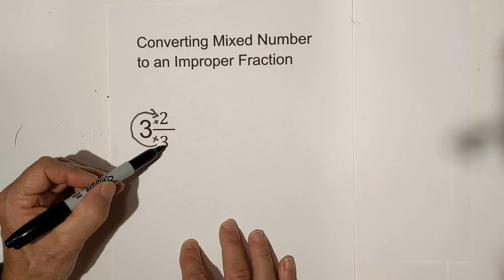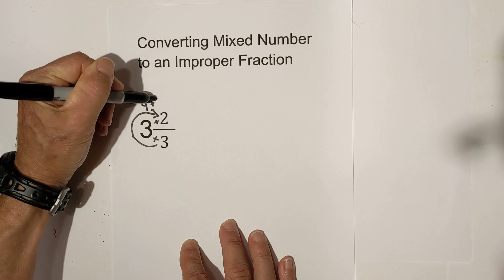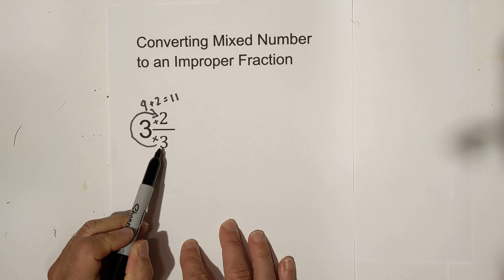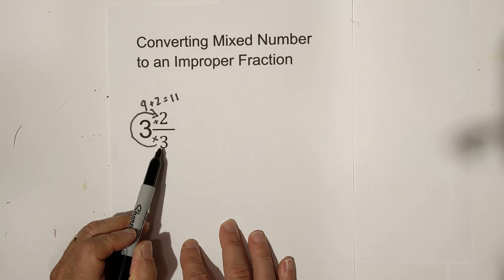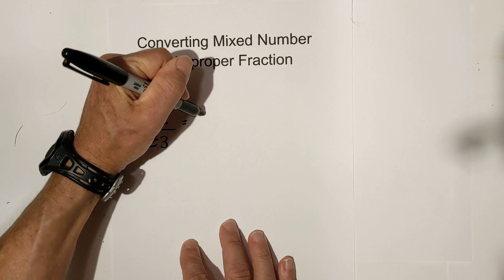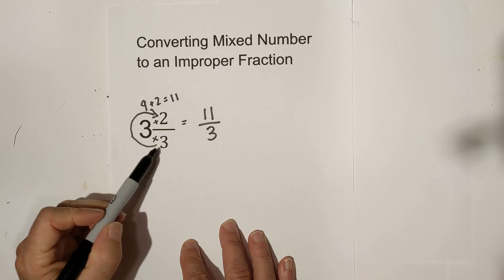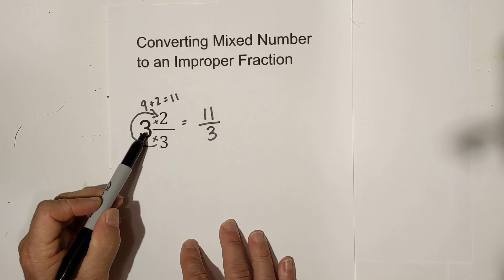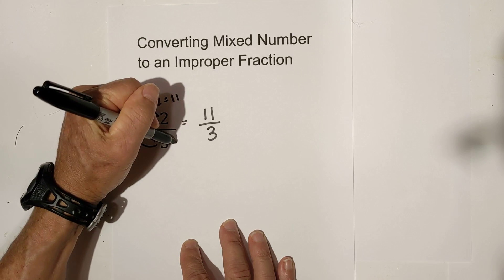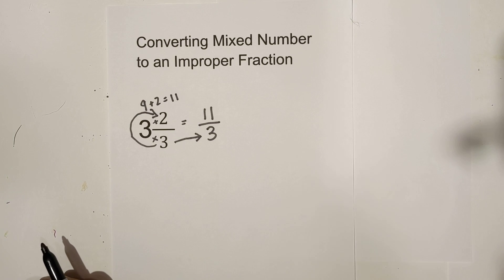So in this case 3 times 3 is 9 plus 2 equals 11 and you always place it over the denominator of the fraction. So this would become 11 thirds. So again 3 times 3 is 9 add 2 that's where we get the 11 and then basically move this over here. Let's work another example.